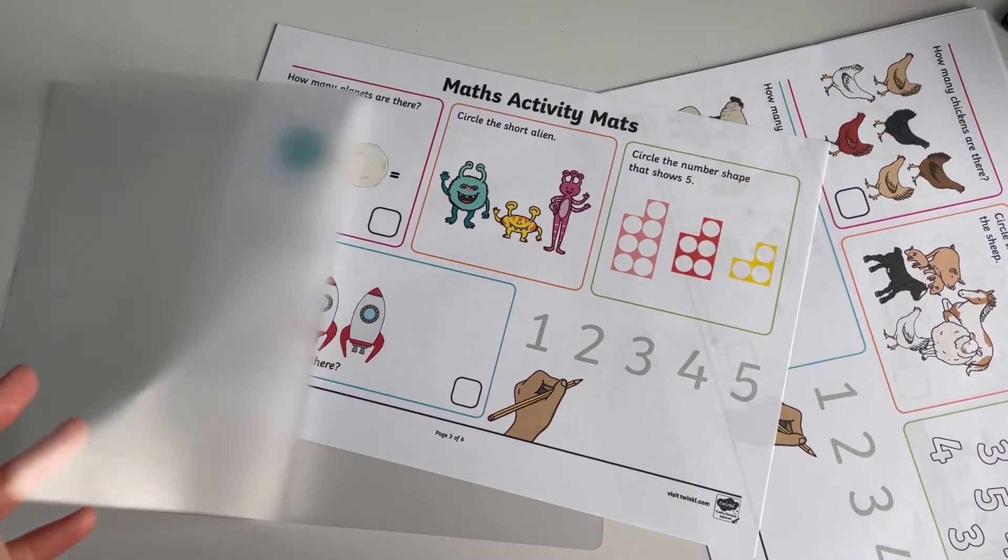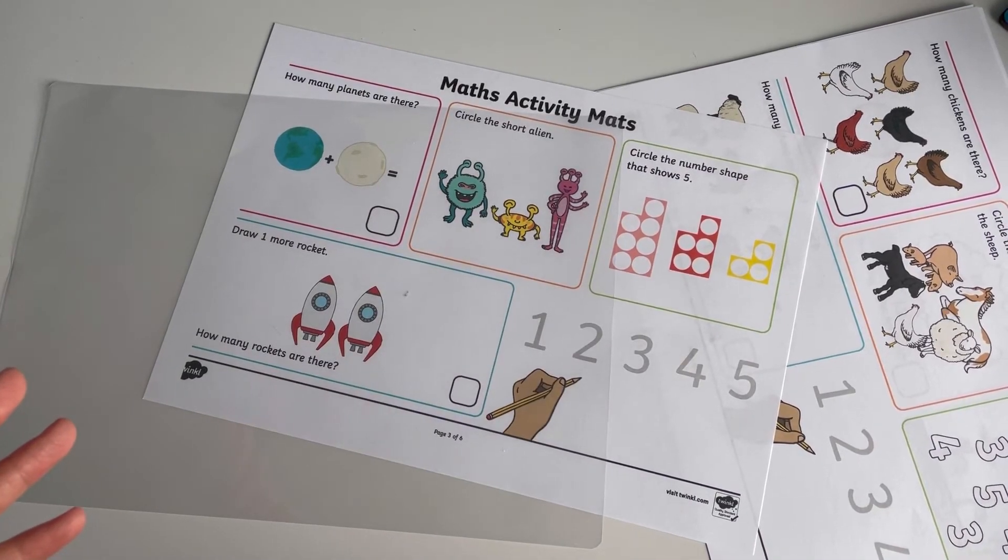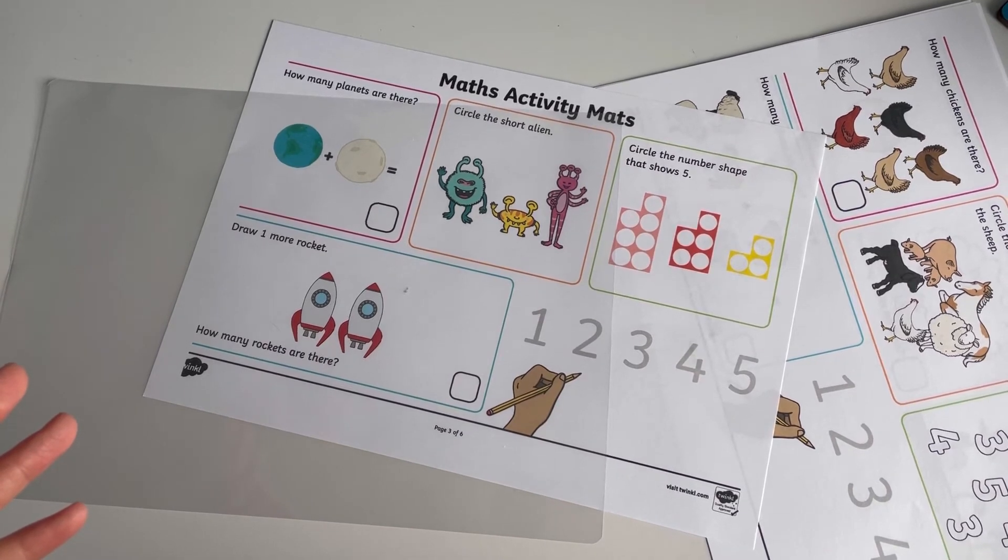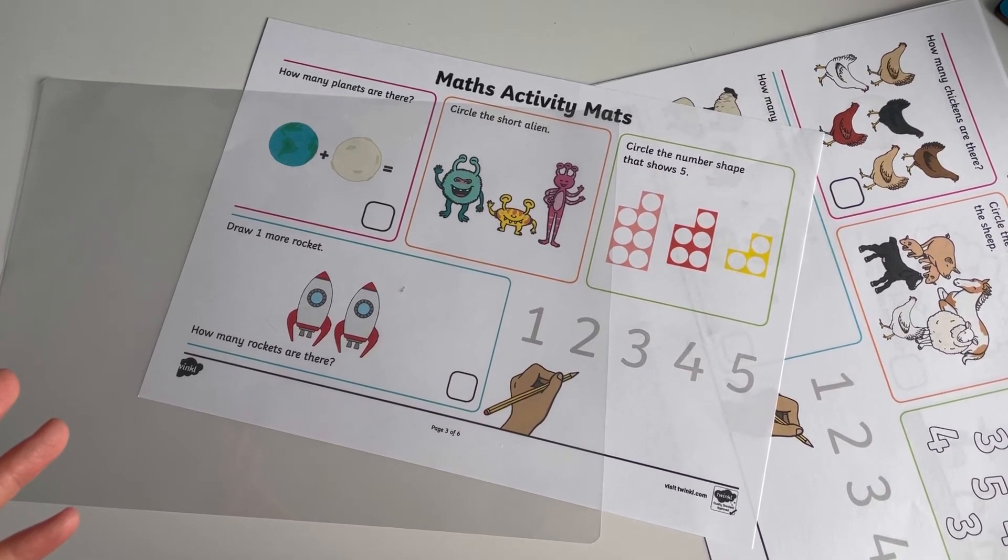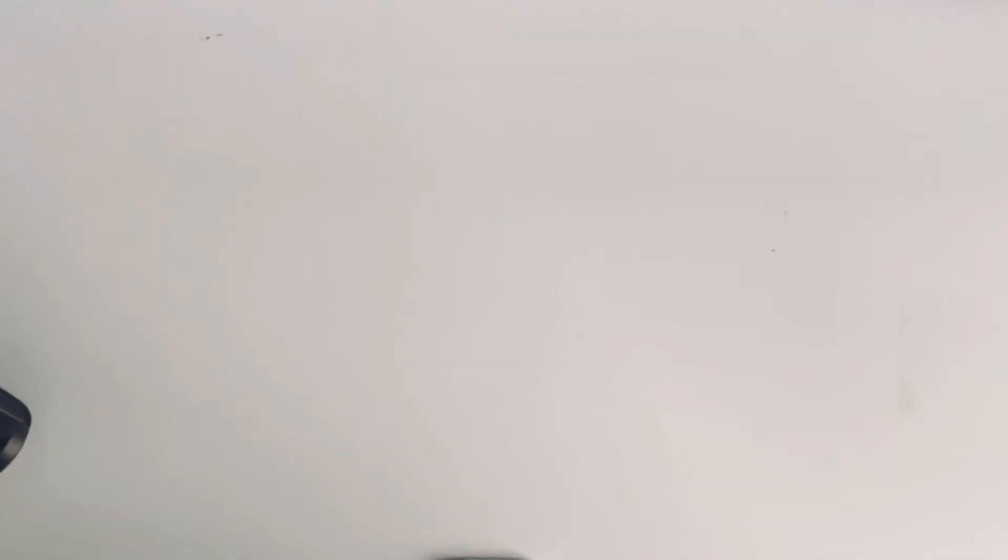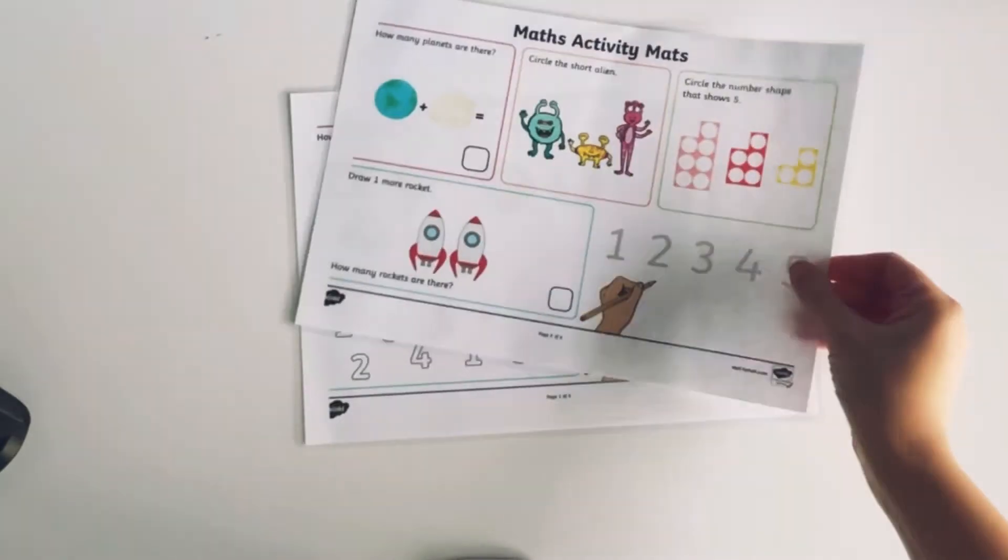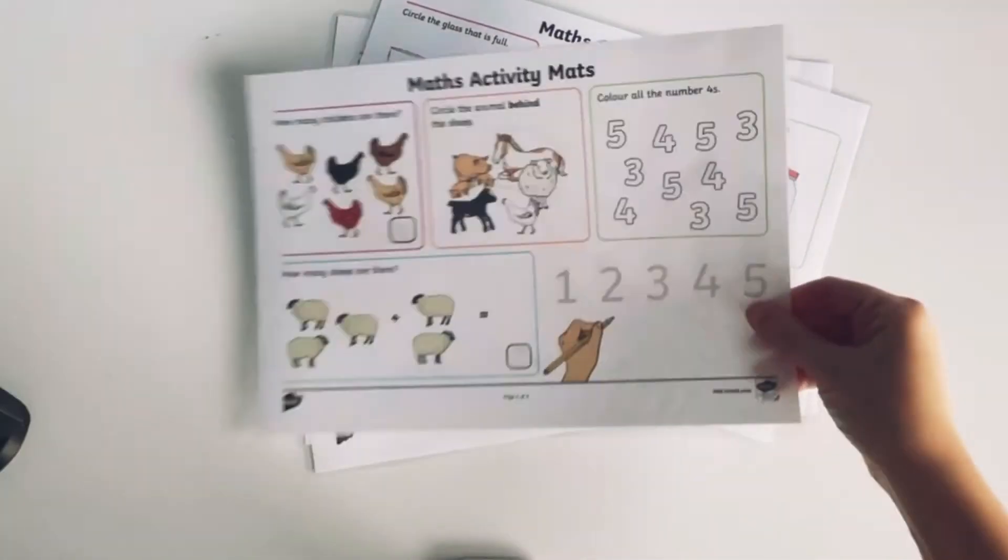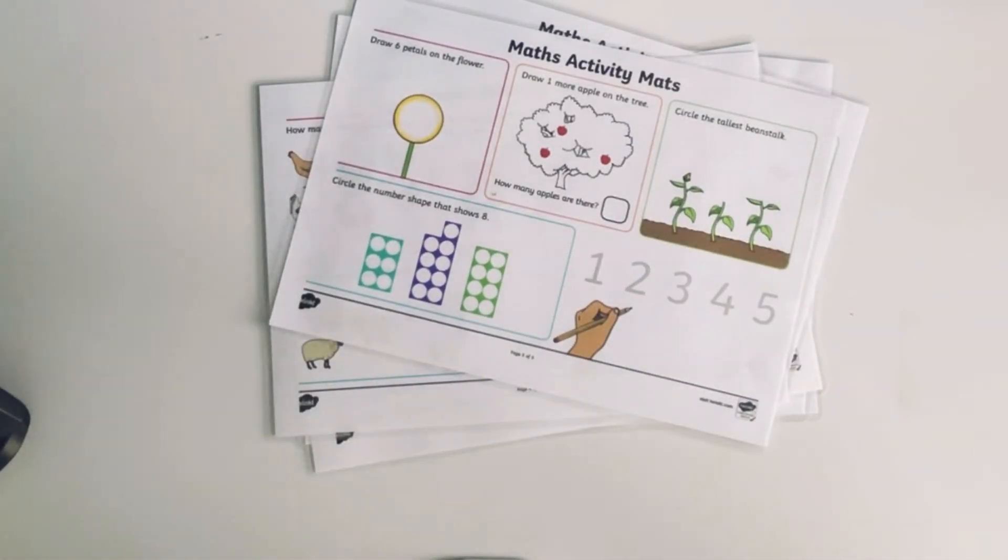We have a range of themed activity mats to support number and counting. You can laminate these or place them in a plastic wallet so that you can reuse. These mats include number recognition, number formation, basic addition, subtraction and positional language learning.